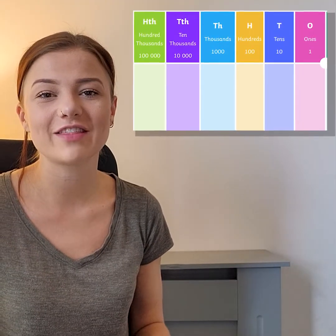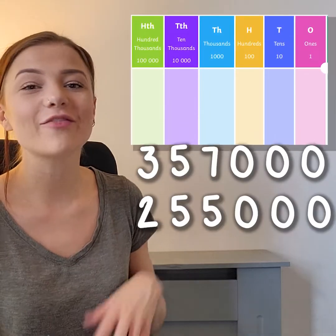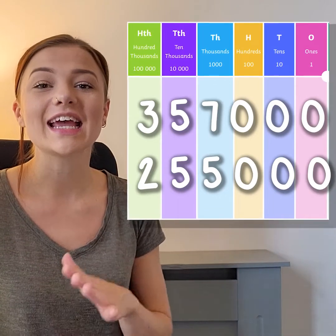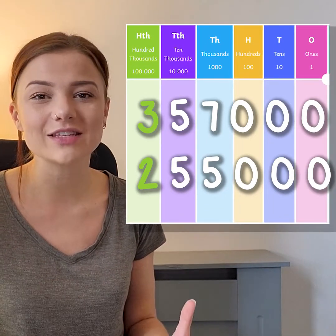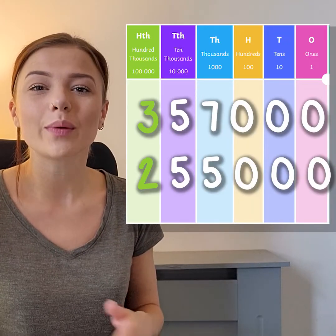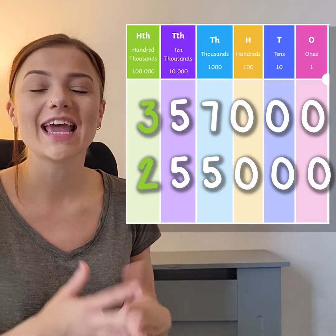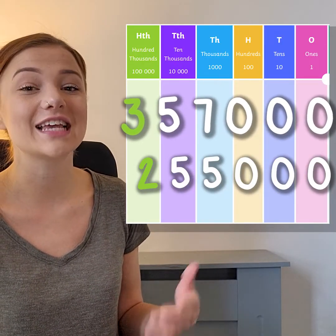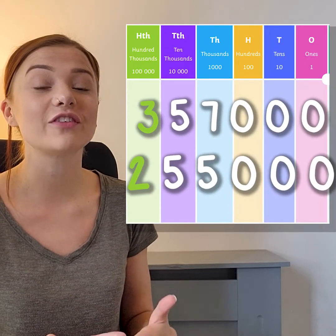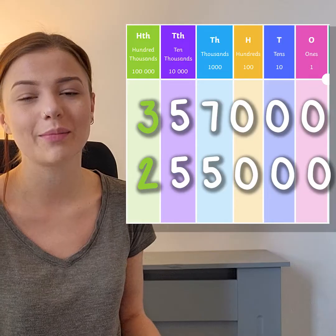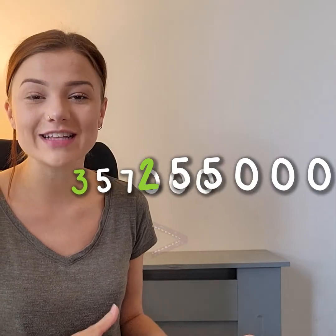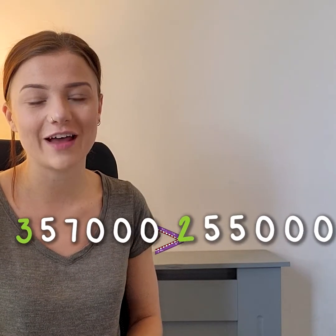Here are the numbers 357,000 and 255,000. If we put them onto our place value chart we can see that they both have their highest value digit in the hundred thousands column. So in order to compare these two numbers we need to look at which one has the greatest digit in the hundred thousands column. 357,000 has a three and 255,000 has a two. We know that three is greater than two, therefore 357,000 is greater than 255,000. Here we can use the greater than symbol.